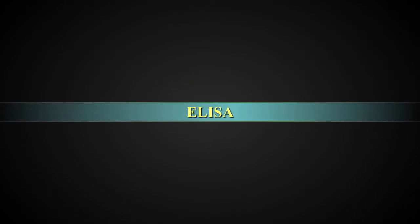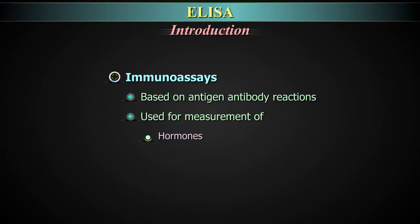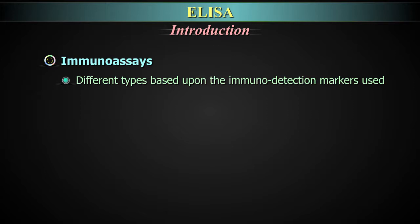ELISA. Introduction. Immunoassays are based on antigen-antibody reactions. They are used for measurement of hormones, drugs, viral serological markers in the form of antibodies or antigens. The immunoassays are of different types based upon the immunodetection markers which are used.